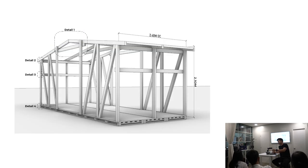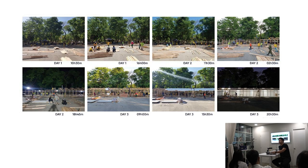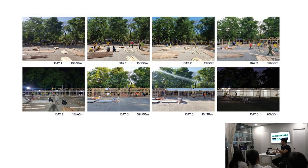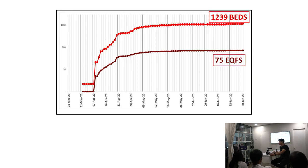This is a time-lapse of the construction of the first EQF. We completed it in three days, and the last two days were spent filling in the beds, curtains, and interior fittings. Starting April 1st — we thought it was another April Fool's joke — up to May we did 70 EQFs, with a total of about 85 built, though 75 were formally recorded.